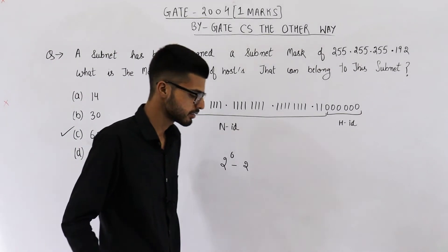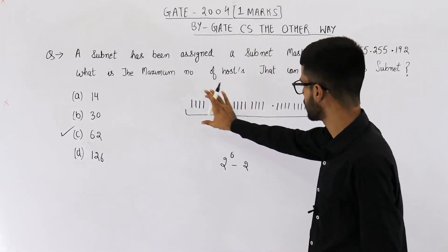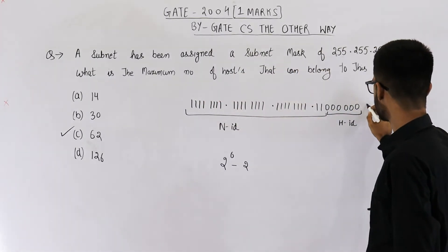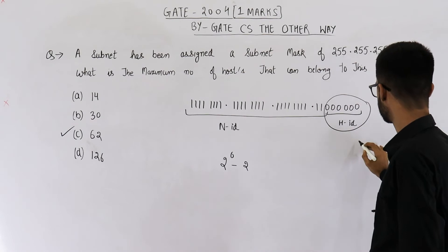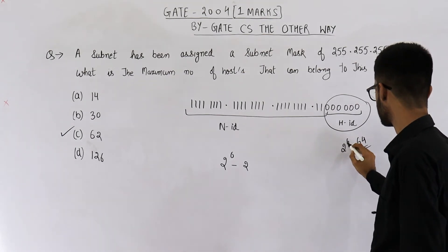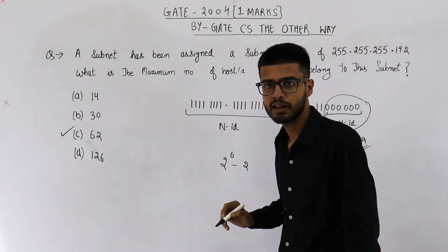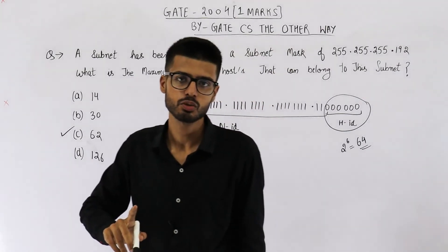See, in this network, you can have a maximum of 64 IP addresses because 2 raised to the power 6 is 64. But 2 IP addresses, the first one and the last one, they will not be assigned to any host.